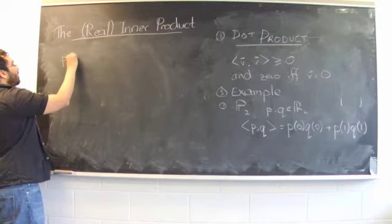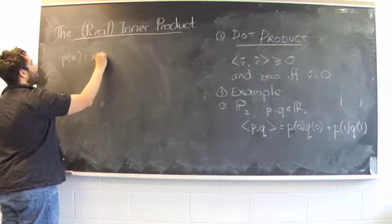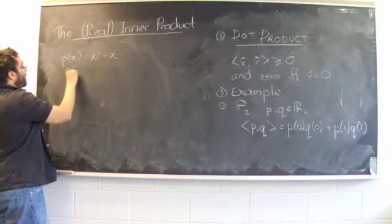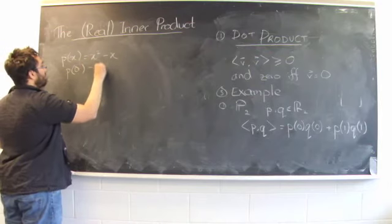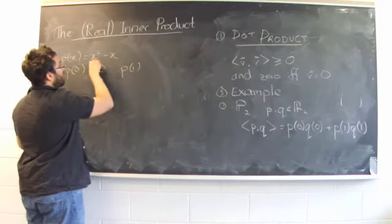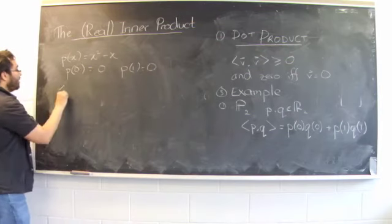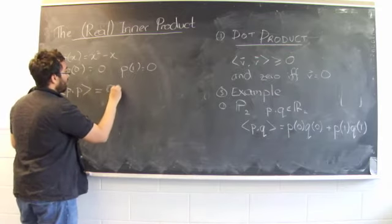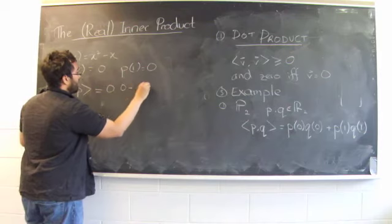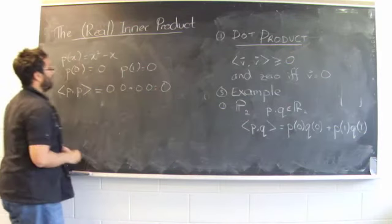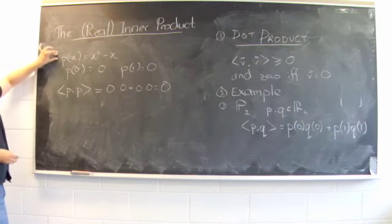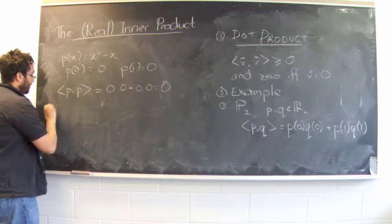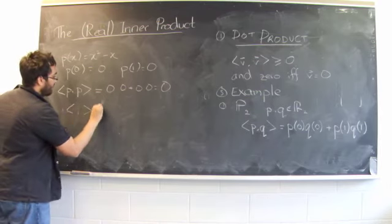How do I show that? Say I take a particular polynomial given by p(x) = x² - x. So this is a perfectly good second degree polynomial. Notice that p(0) is zero minus zero, which is zero. And p(1) is one minus one, which is also zero. So then the inner product of p with itself is just zero times zero plus zero times zero, which is a big zero. However, the polynomial that we started with is not the zero polynomial. So this tells us that, therefore, this function is not an inner product.